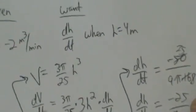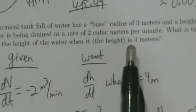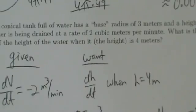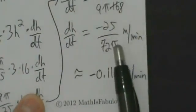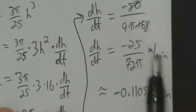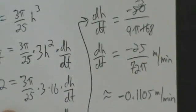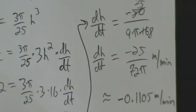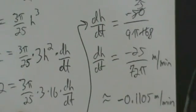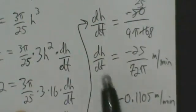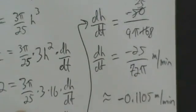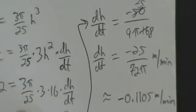If we wanted to express that in words: when the height is four meters, the height of the water is decreasing at a rate of 25 over 72π meters per minute. When we answer in English, we don't use the minus sign because we use the word 'decreasing,' which implies it's negative. But in mathematical notation, dH/dt has to have the minus sign. That's example five with related rates.